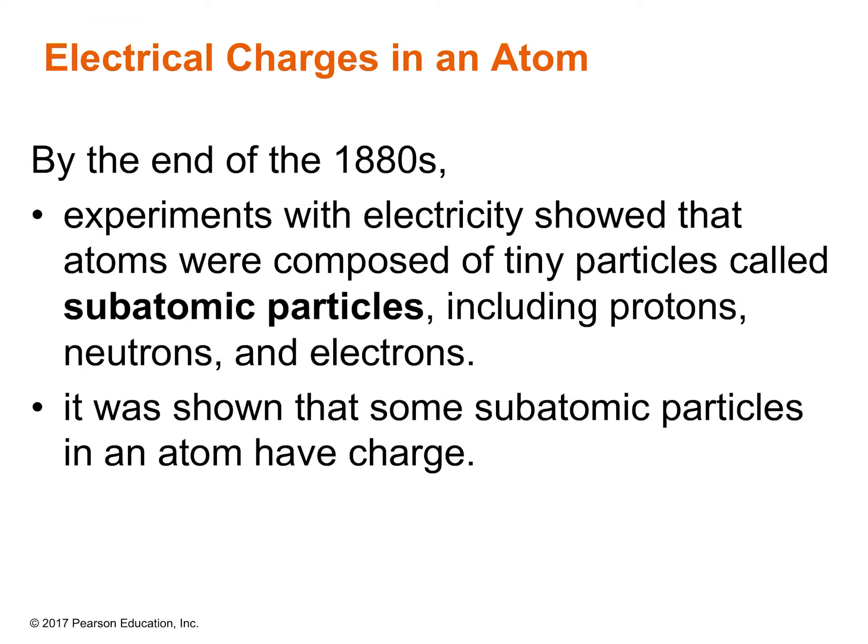At the end of the 1880s, we had some more experiments with electricity that showed that the atom was not actually the smallest thing out there. There were these things called subatomic particles — sub meaning smaller, and atomic referring to the atom. Subatomic particles means things that are smaller than the atom. The atom is actually made up of stuff: protons, neutrons, and electrons. And it was shown that some of these subatomic particles actually have a charge. We're going to talk about some of the experiments that led to these discoveries.